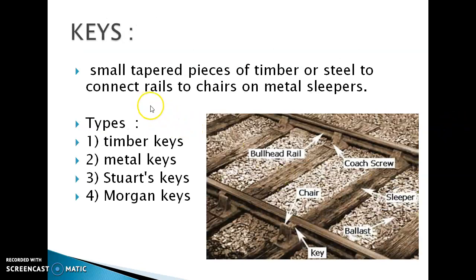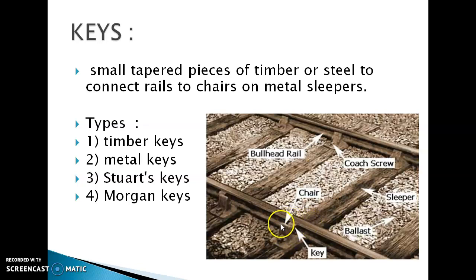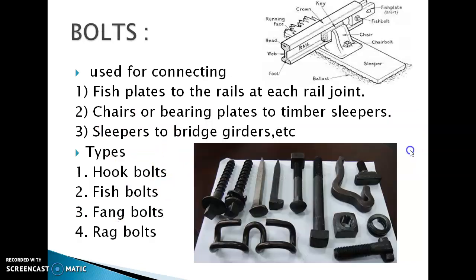Keys are small tapered pieces of timber or steel used to connect rails to the chairs on metal sleepers. As shown in the figure, the key is placed between the rail and the chair. Depending on the material, keys are classified into four types: timber, metal, strots and Morgan keys.